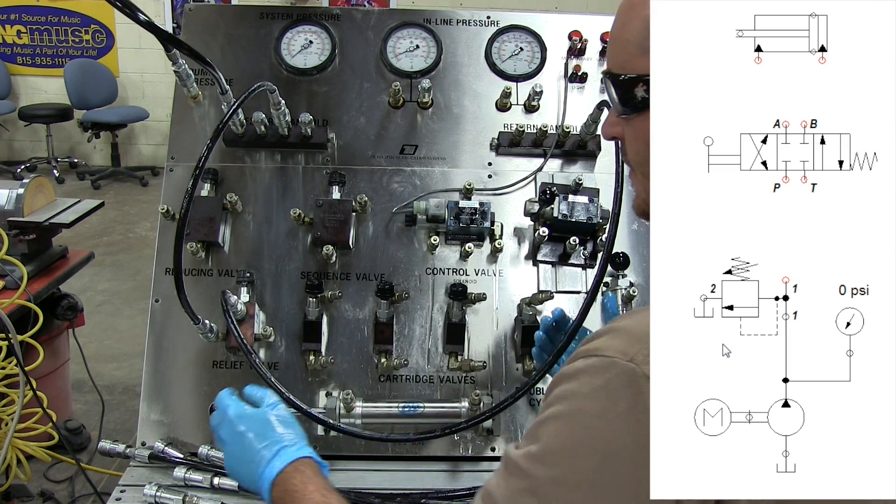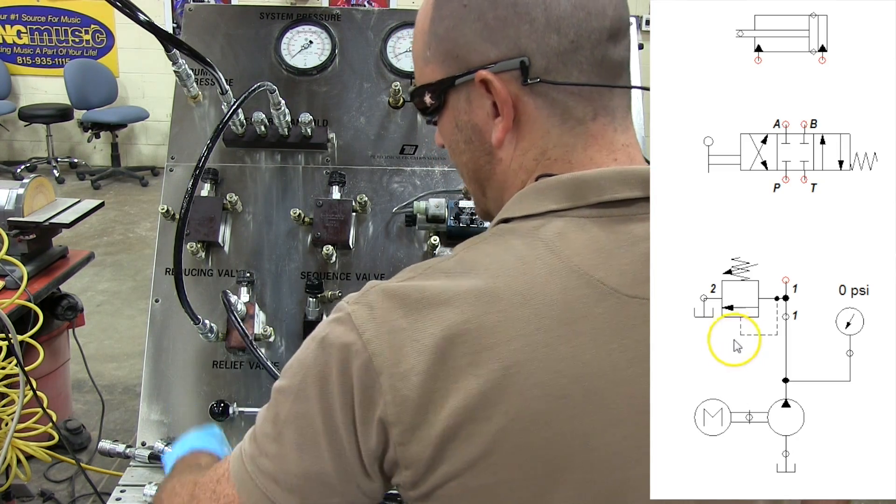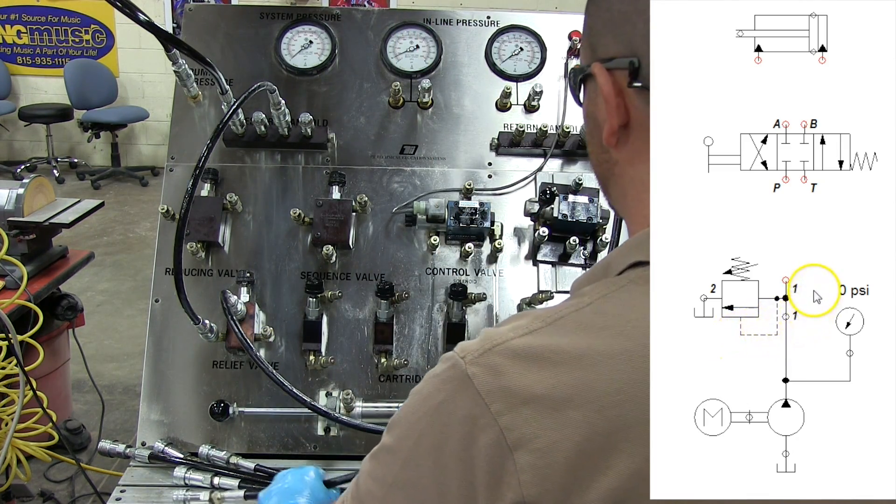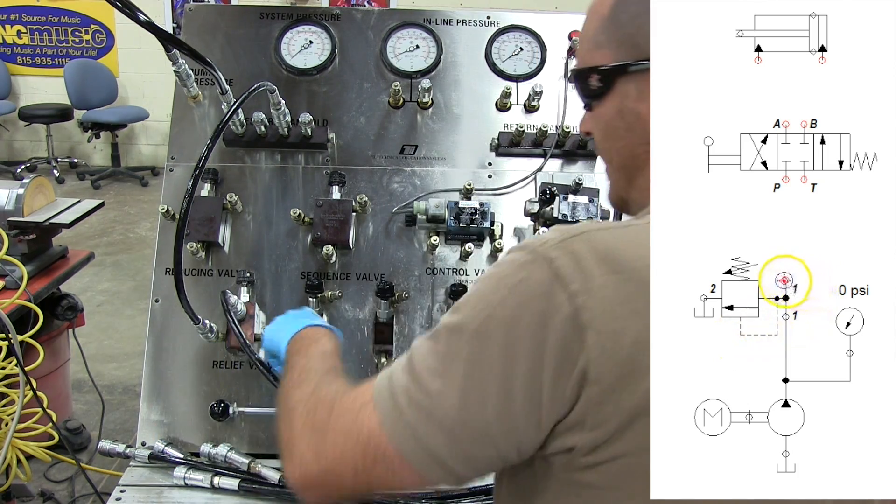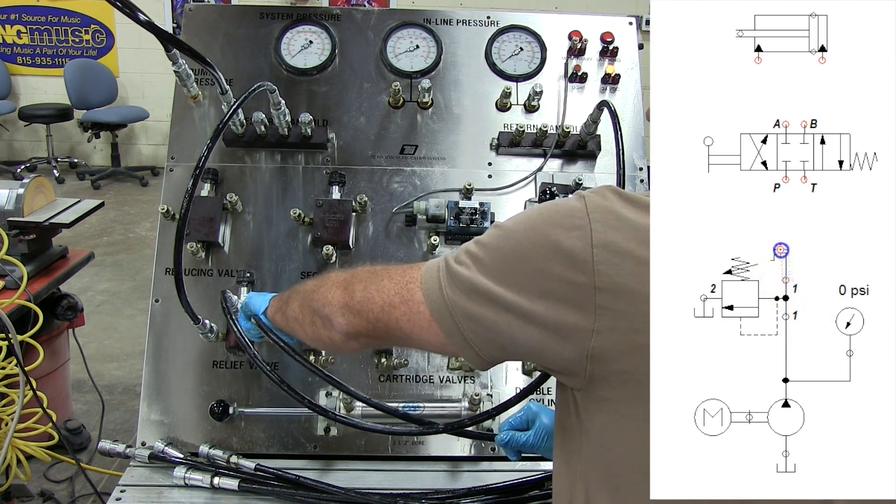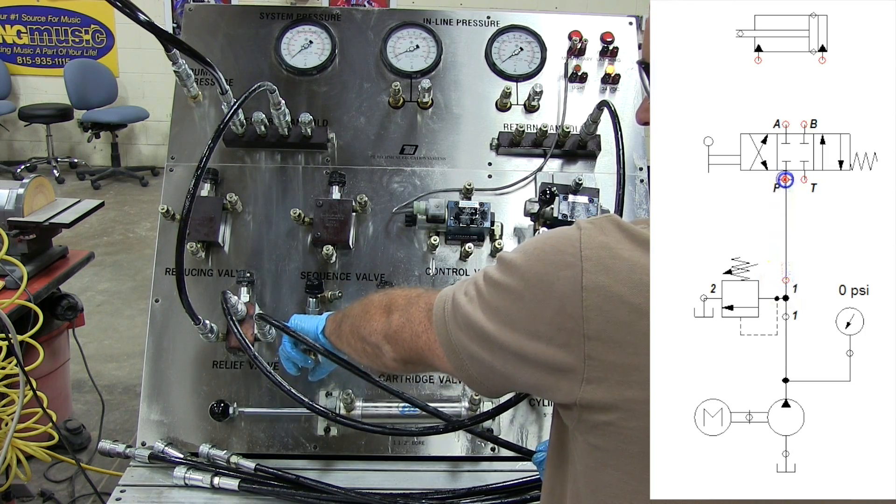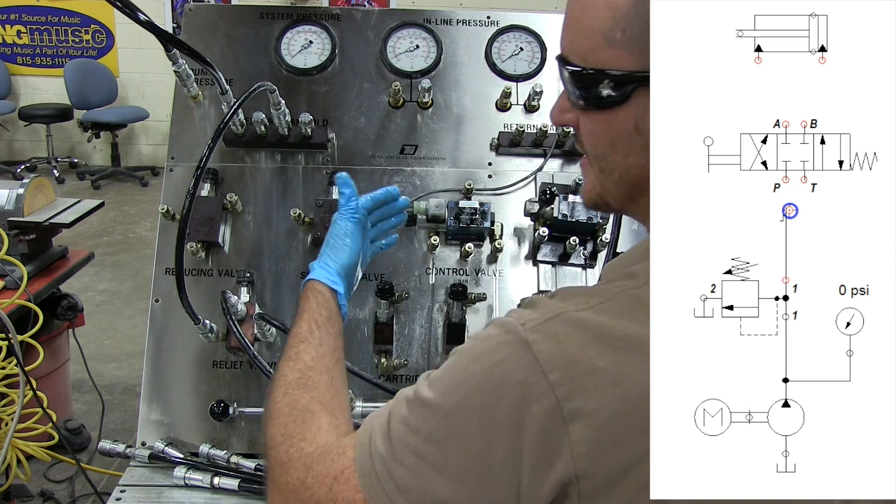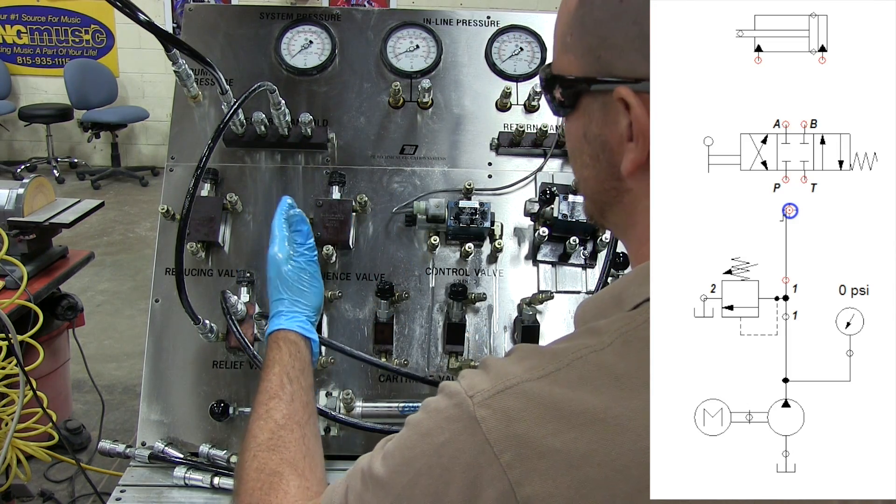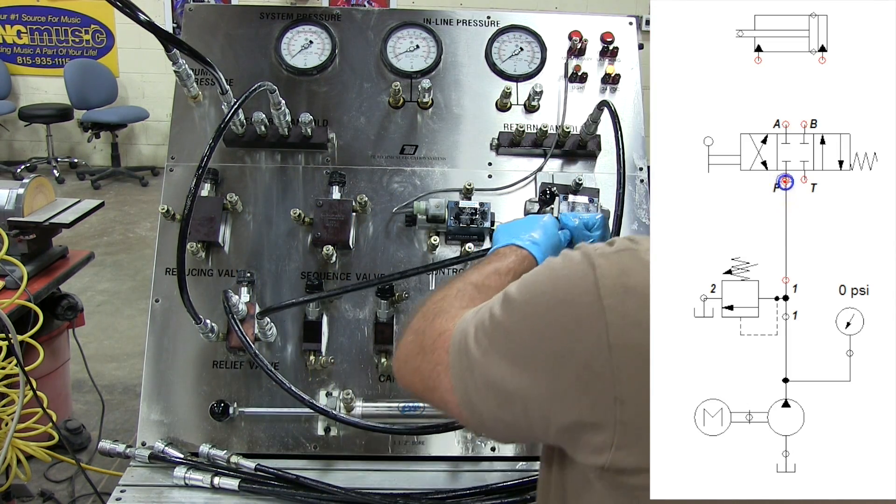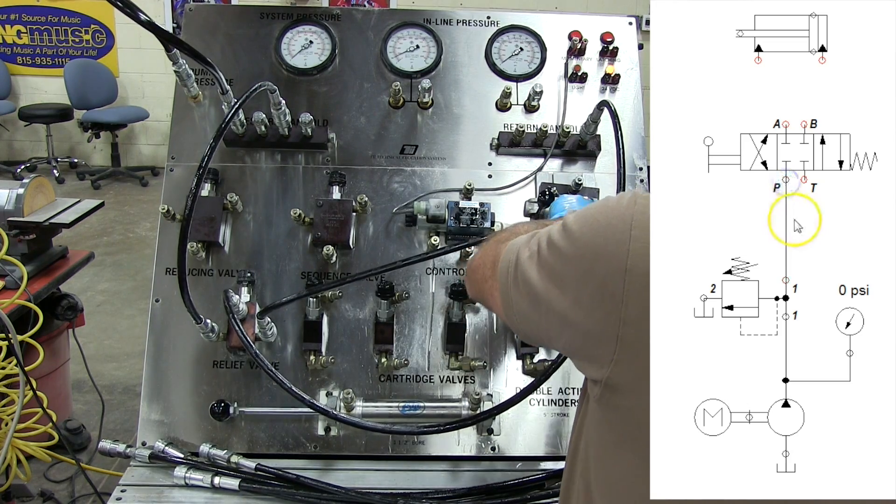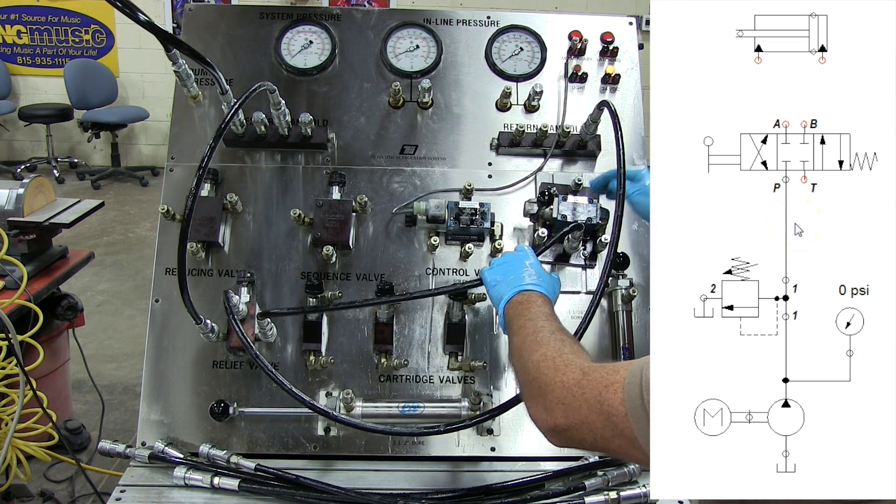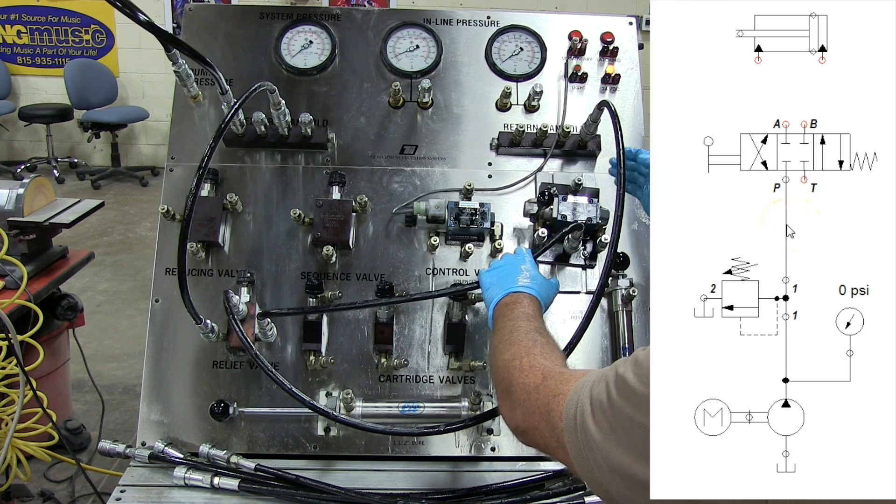Now what we want to do here is we want to take advantage of that internal T. So from this T, what we're going to do is we're actually going to go ahead and hook up to the pressure port of the directional control valve. So I'm bringing it from that T, which sometimes is represented by a dot, sometimes it's not, it's just a T in the actual diagram, and I'm running this over to the pressure port on my 4-3 lever controlled valve.